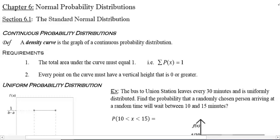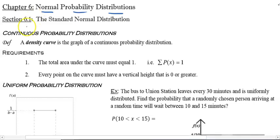Chapter 6 talks about normal probability distribution — we dealt with that slightly before on the previous exam when we talked about a bell-shaped curve. We're going to start section 6.1 with the standard normal distribution.